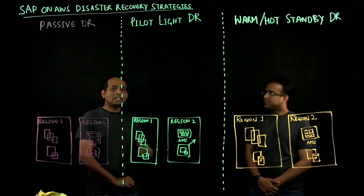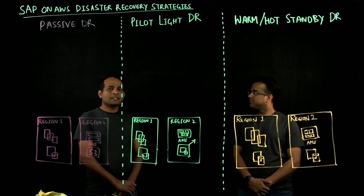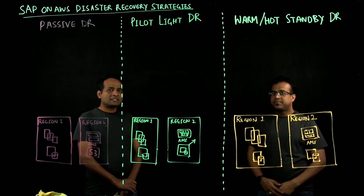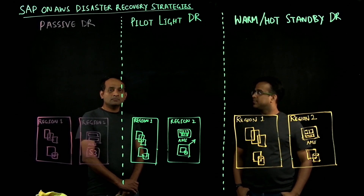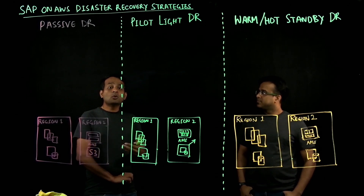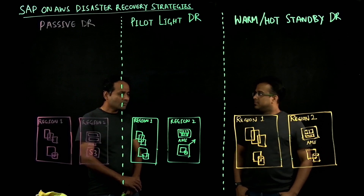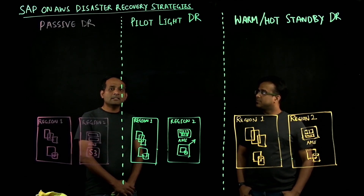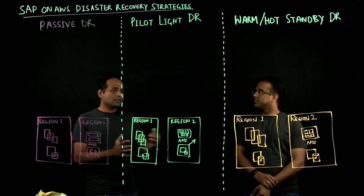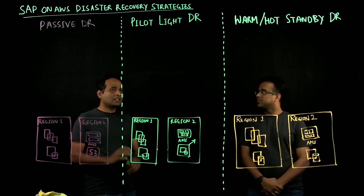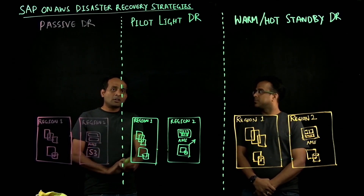Absolutely. It is a very important discussion that we at AWS will always have with our customers and partners. As many of you know, there are more than 5,000 SAP customers that are running on AWS. I would like to start by defining RPO and RTO, and then compare and contrast all three patterns that are drawn on the board here.